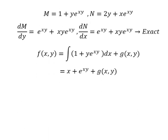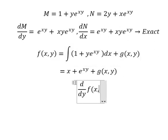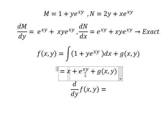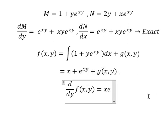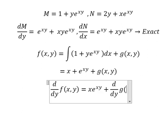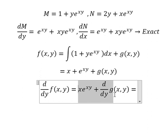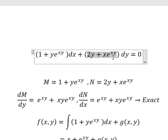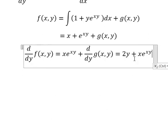Next, we take the first derivative of f with respect to y on both sides. The first term gives zero, and this term gives s times e to the power of sy. We know this must equal N, so we simplify both sides and get this result.